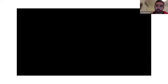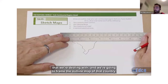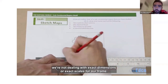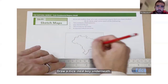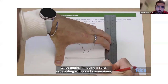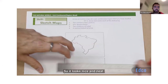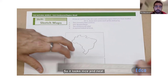Those video tutorials show a voiceover of me completing every single skill on the course. For sketch maps, unlike OS maps, we're not dealing with exact dimensions or exact scales — just drawing a neat frame with a ruler, drawing the same width for the key. It's covered for every single OS skill, every aerial photograph skill, and all our regional sketch maps: the Rhine, Western Region, Paris Basin, and our subcontinental region.